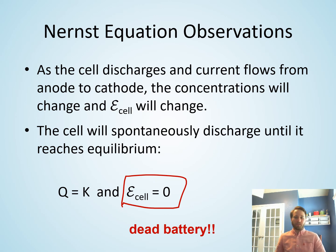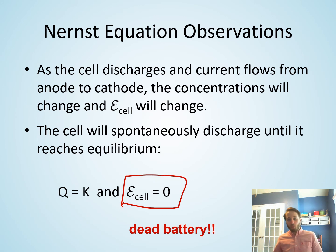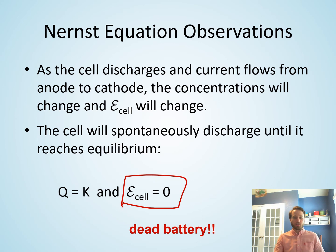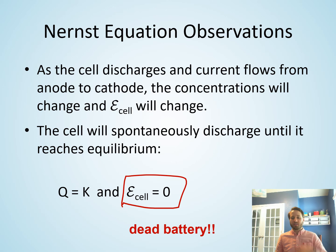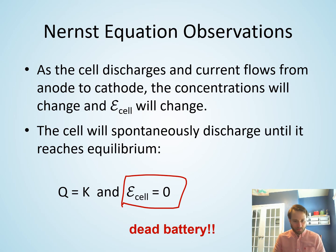For rechargeable batteries, you plug the battery into a power source and provide energy to force products back to reactants. Once unplugged, you have a charged battery with an excess of reactants that want to form products, allowing electricity to flow again and power your device.